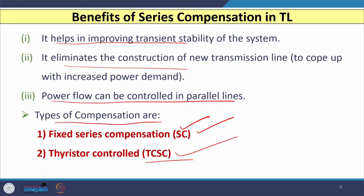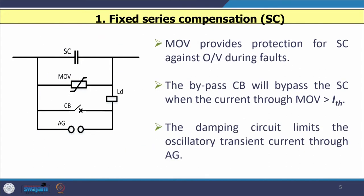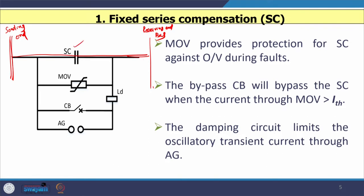Let us start by incorporating a series capacitor in the transmission line. We have a sending end bus and a receiving end bus, and we can install the series capacitor at the sending end, receiving end, or in between. When we install the series capacitor, to protect it against over-voltages, we need a device called a metal oxide varistor, or MOV. The MOV provides protection for the series capacitor against any over-voltage which occurs during a fault.